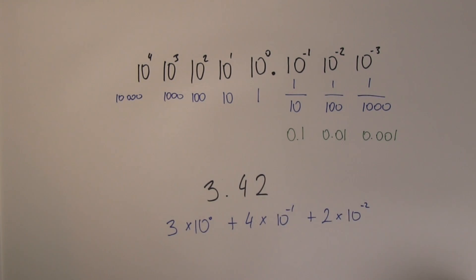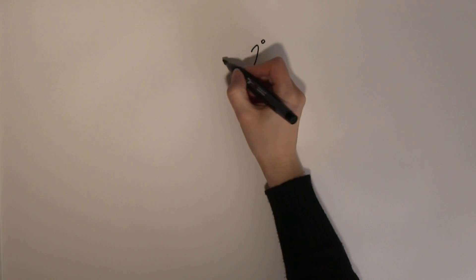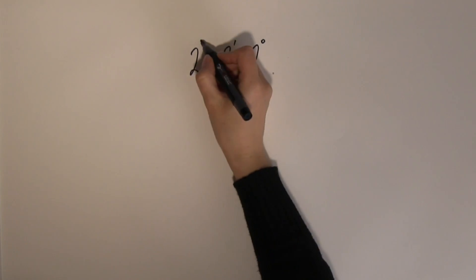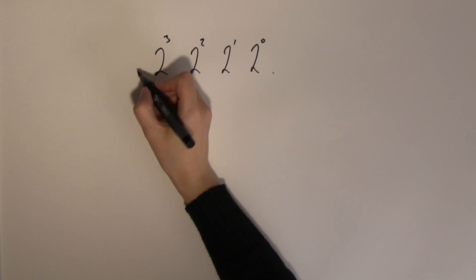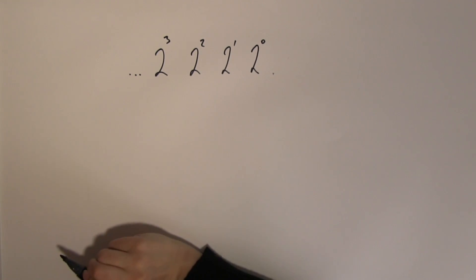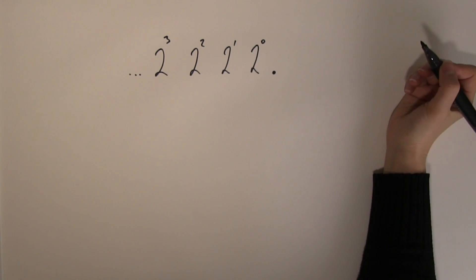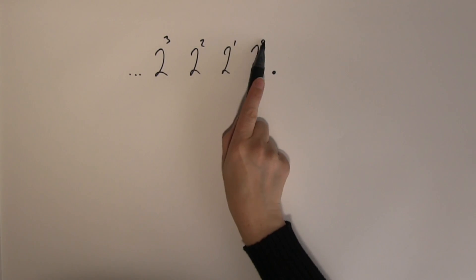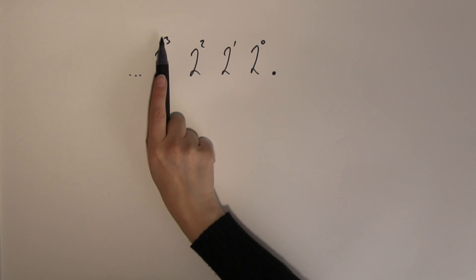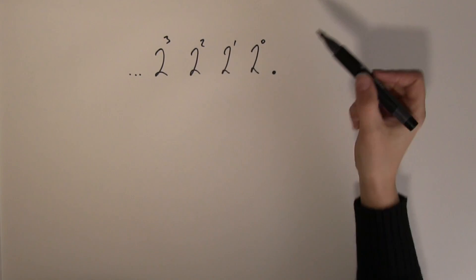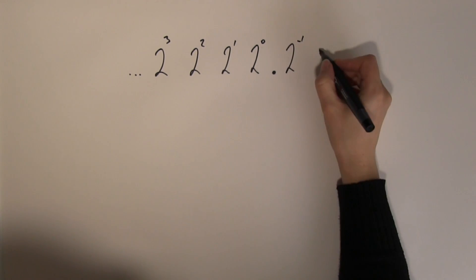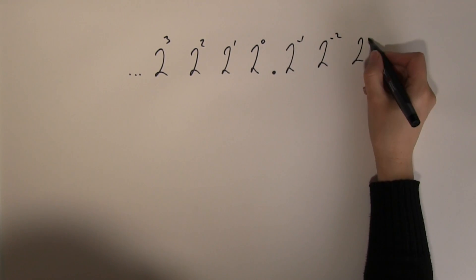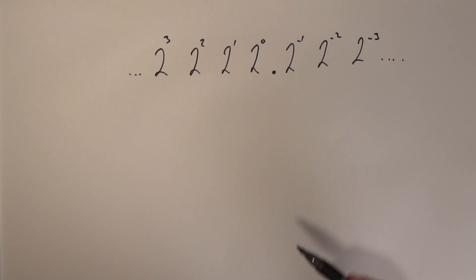Now let's look at how this applies to binary numbers. The binary place value system starts with two to the power of zero, two to the one, two to the two, two to the three, and so on. We can introduce something called the radix point and extend place values to two to the minus one, two to the minus two, two to the minus three, and further depending on how many digits you need.